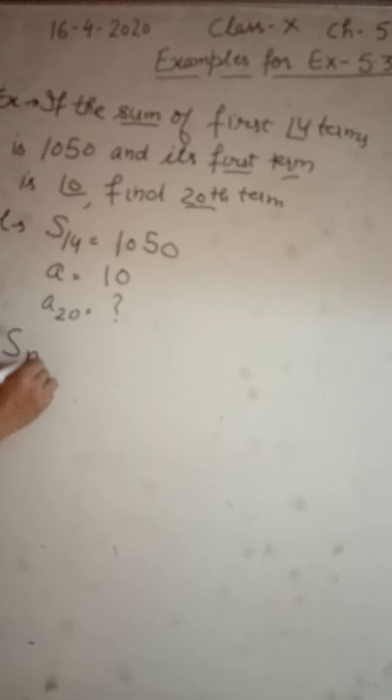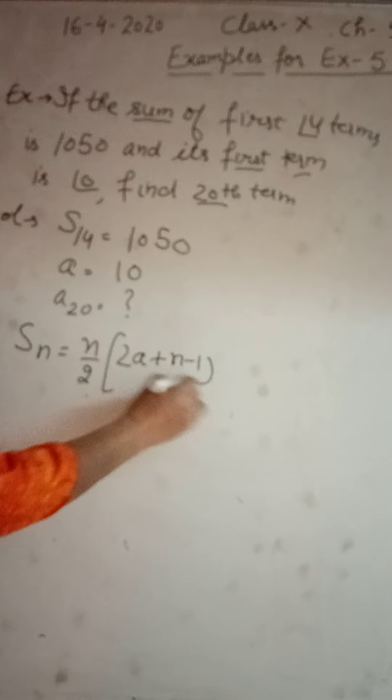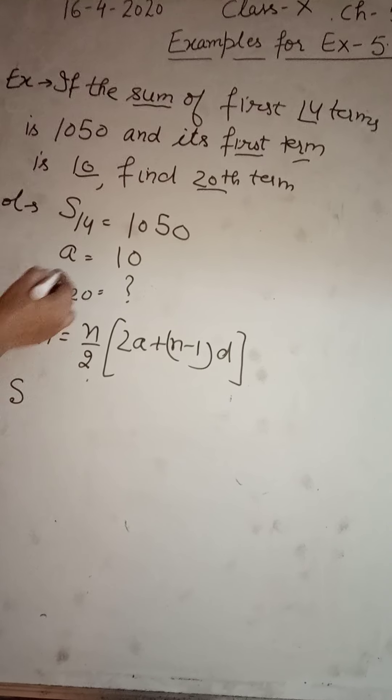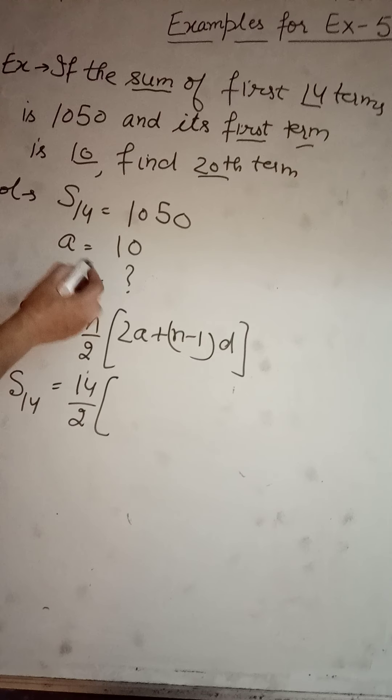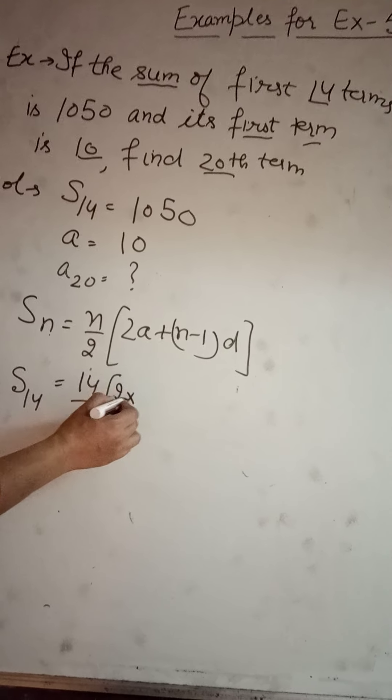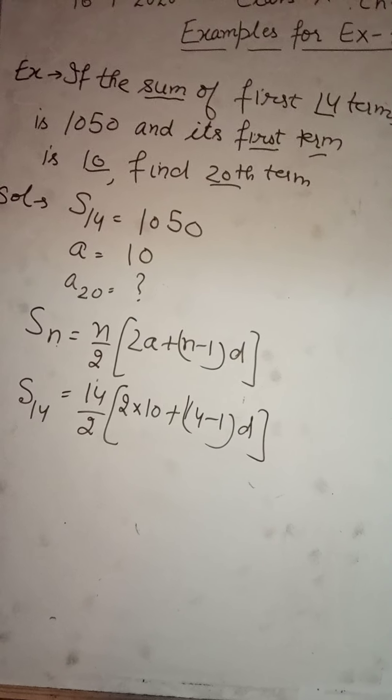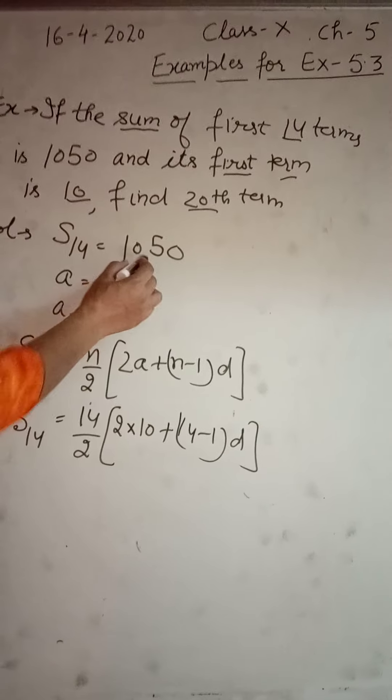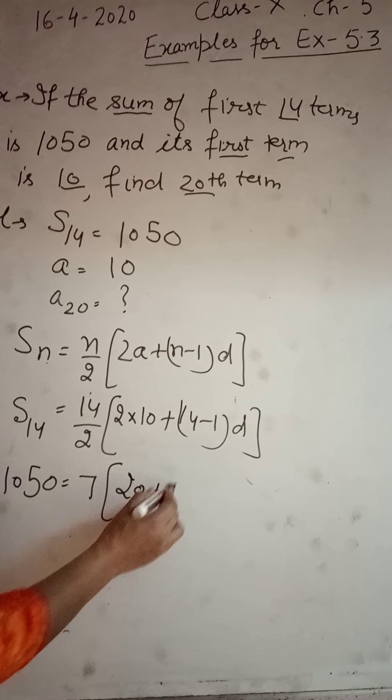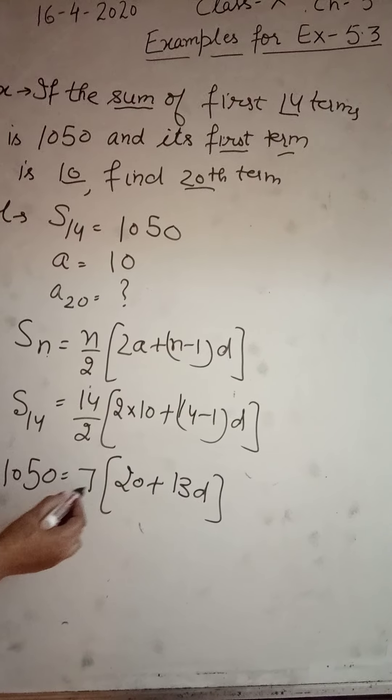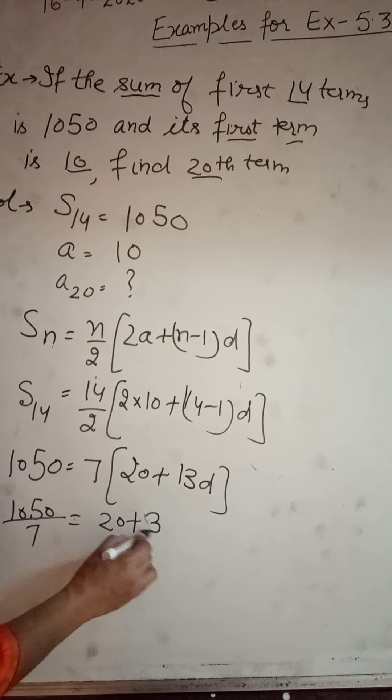Now we will be writing formula for sum of n terms. Now what is n? n here is 14. 14 upon 2, 2 into a, plus n is 14 minus 1. D is not known to us, so first of all we will calculate d. So S14 I will be taking as 1050. Then this gives 20 plus 13d. 7 will come here. 1050 divided by 7, 20, 13d.